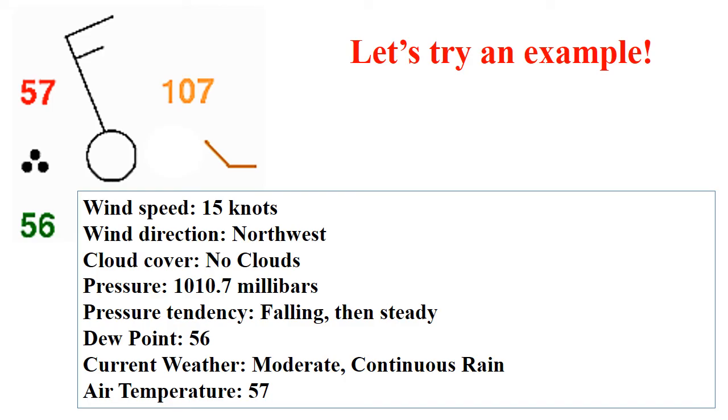Now that we've seen how to read a weather station model, let's try an example. We see on this weather station model a 57 in the upper left, a 56 in the lower left, three dots between the 57 and 56, an open circle, a pole extending from the circle and pointing to the northwest, a long barb, a short barb on the pole, 107 in the upper right, and a downward diagonal line followed by a horizontal line.